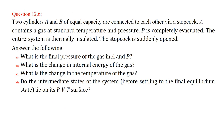Two cylinders A and B of equal capacity are connected to each other via a stopcock. A contains a gas at standard temperature and pressure and B is completely evacuated. The entire system is thermally insulated, so there is no heat transfer in or out. The stopcock is suddenly opened. We have to answer: what is the final pressure of the gas in A and B? What is the change in the internal energy of the gas? What is the change in temperature, and do the intermediate states of the system lie on the PVT surface?